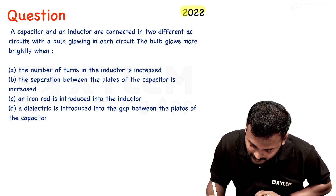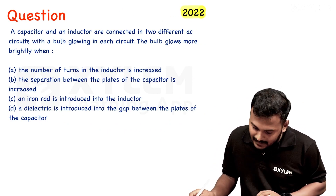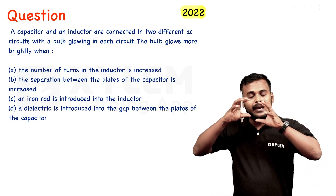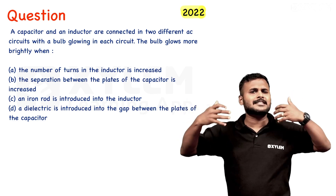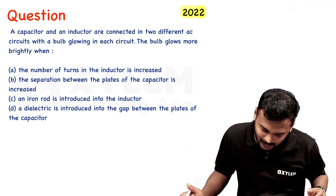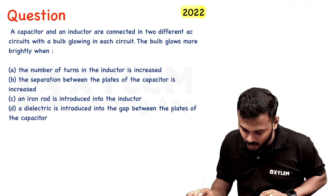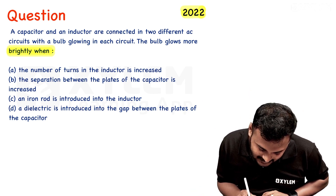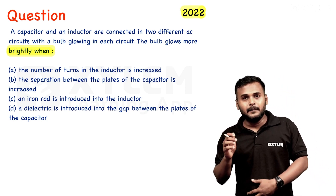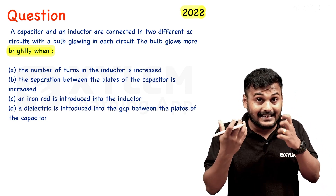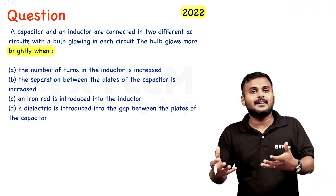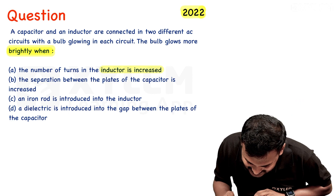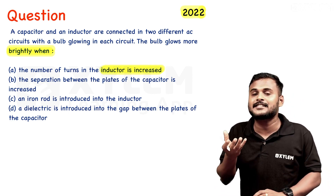A previous year question: a capacitor and an inductor are connected in two different AC circuits, with a bulb glowing in each circuit. The bulb glows more brightly when — we need to analyze each option. Option A: the number of turns of the inductor increases, so inductance increases.